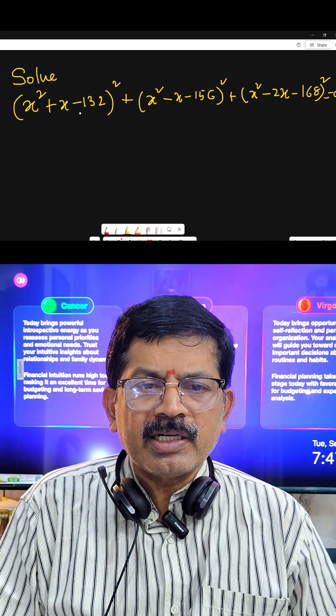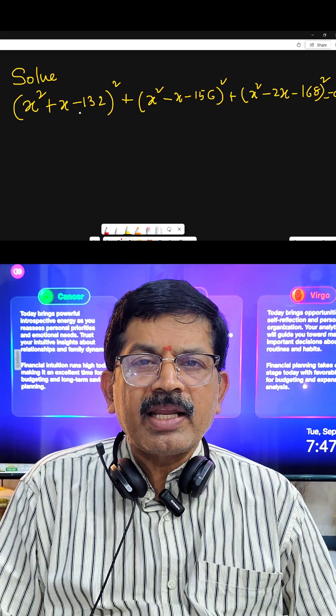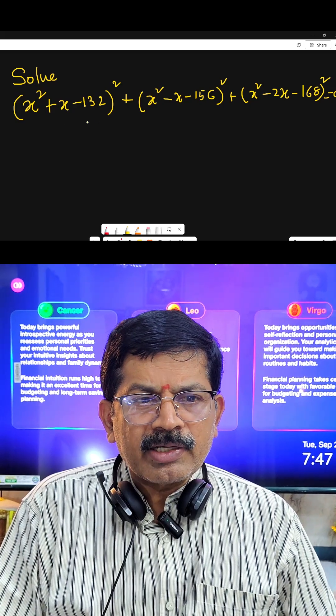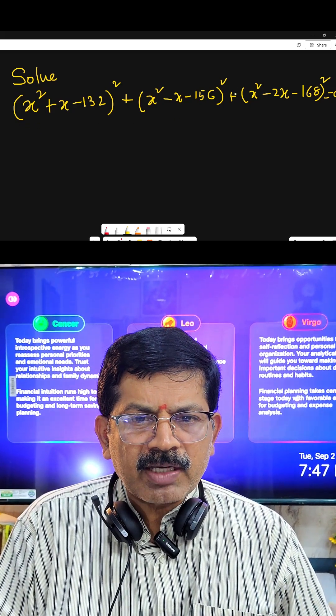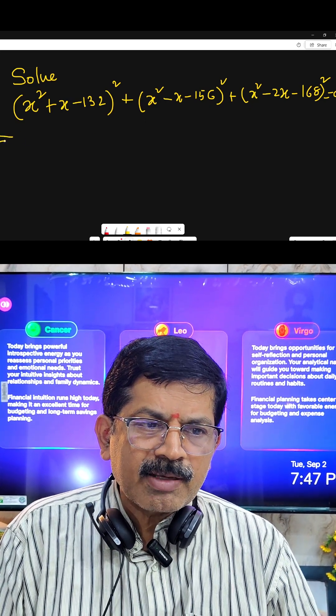But the concept is here: the sum of some non-negative terms are 0, then each number will be 0. You know that the square of any real number is non-negative. So here three terms are there. All the terms have whole squares, so all three terms are non-negative. So this implies...